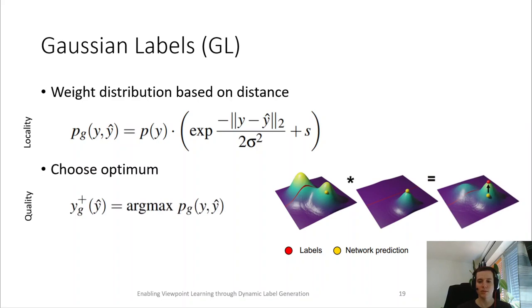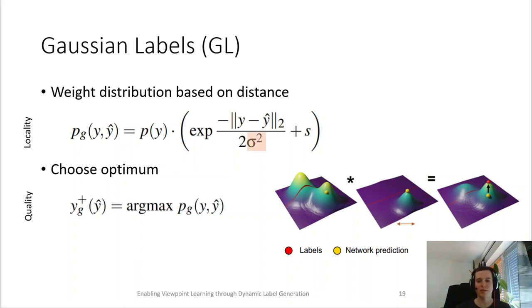Now, as the label, we choose the maximum of the result of this multiplication, which would select the closer global maximum of the original distribution. In this setting, we have two parameters to control the locality of this method. First, we have the variance of the Gaussian function, which controls the width of the Gaussian kernel.